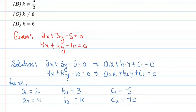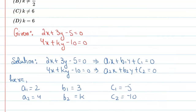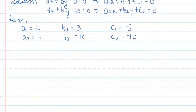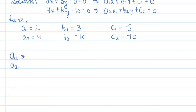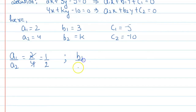Now we calculate the ratios to apply the given condition. The ratio a1/a2 = 2/4 = 1/2. The ratio b1/b2 = 3/k.